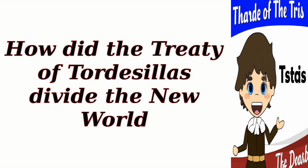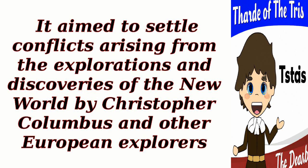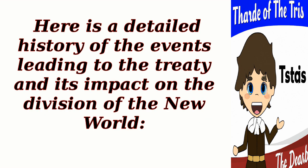How did the Treaty of Tortillas divide the New World? The Treaty of Tortosillas was a significant agreement signed on June 7, 1494, between the kingdoms of Spain and Portugal. It aimed to settle conflicts arising from the explorations and discoveries of the New World by Christopher Columbus and other European explorers.